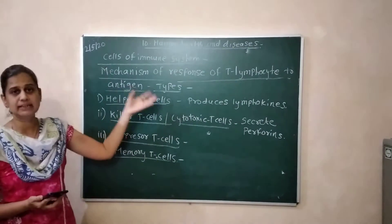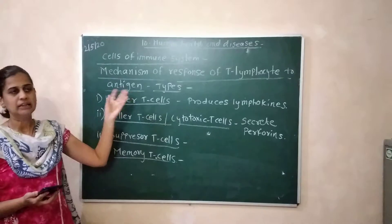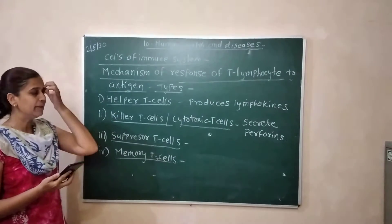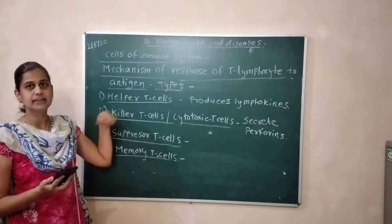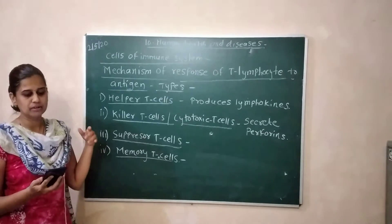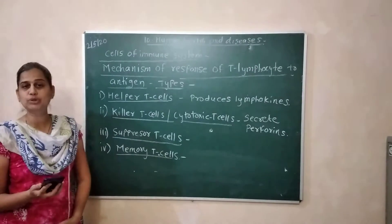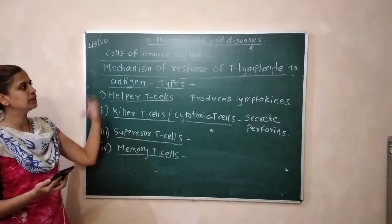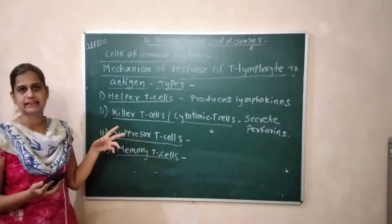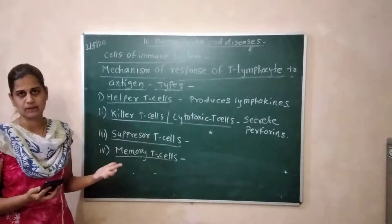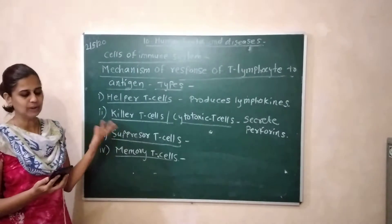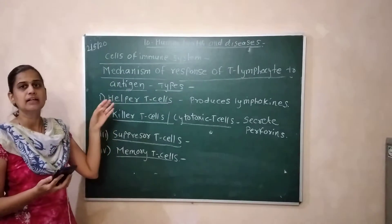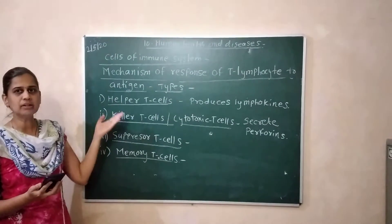T-lymphocytes respond to the antigen. When T-lymphocytes come in contact with an antigen, they proliferate and form many more clones of T-cells. When antigen-contacted T-lymphocytes form clones, those clones serve various functions.